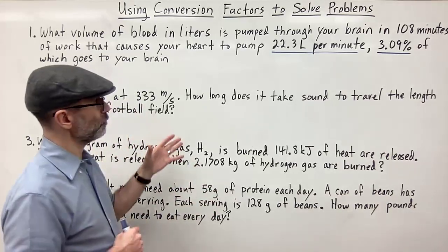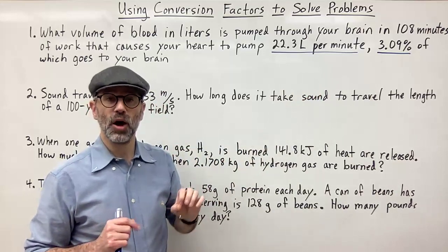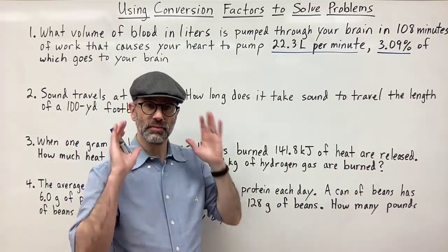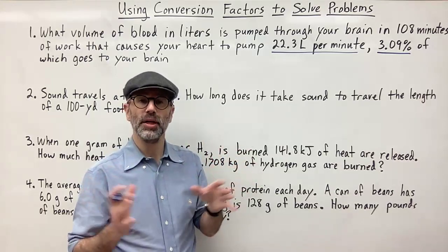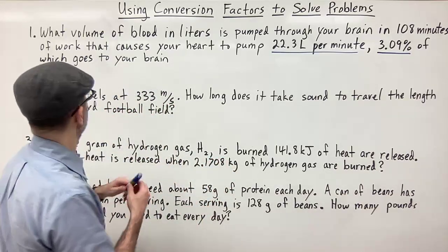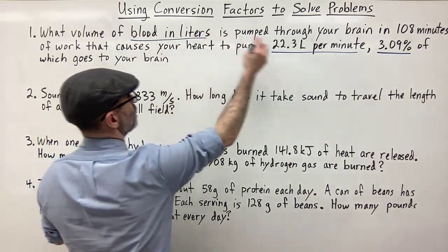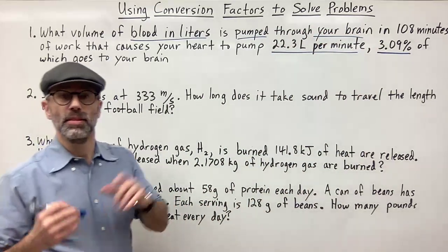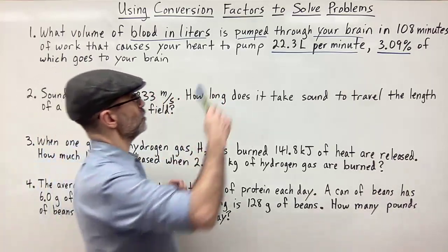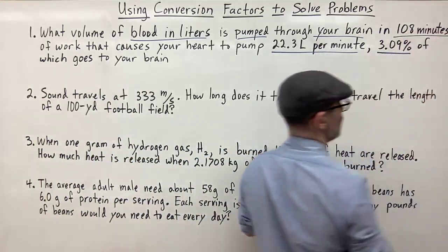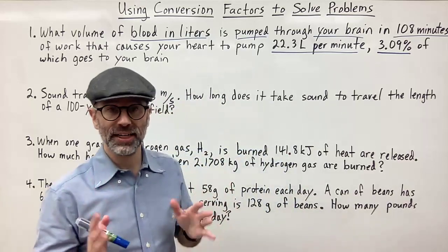Now that we've got our conversion factors, we figure out where to begin and where to end — that's the second thing. The question has the beginning and the end 99.9% of the time, and the beginning of the question is the end of your problem. The question asks for volume of blood in liters pumped to your brain — that's where we need to go. Where do we start? Keep reading the question. It says in 108 minutes, so this 108 minutes is where we begin. It's standalone information, so that's a dead giveaway.